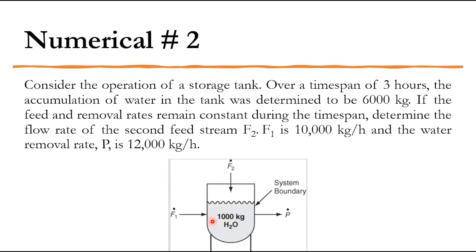Numerical number two: consider the operation of a storage tank over a time span of three hours. Now time is included. The accumulation of water in the tank was determined to be 6,000 kg. There are two feed streams F1 and F2, and one outlet P. F1 is 10,000 kg/hr and the water removal rate is 12,000 kg/hr. We need to find the value of F2, given accumulation is 6,000 kg over three hours.